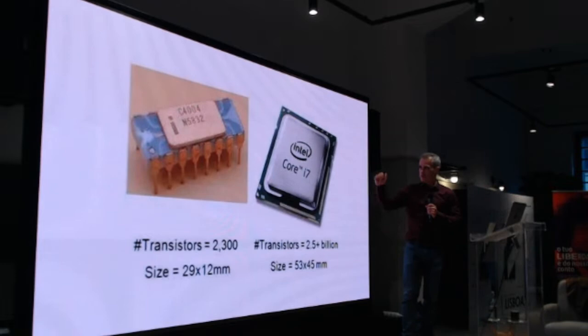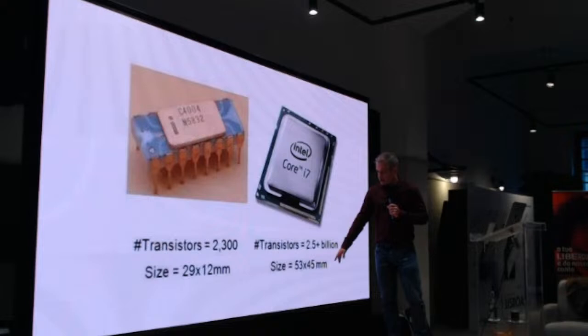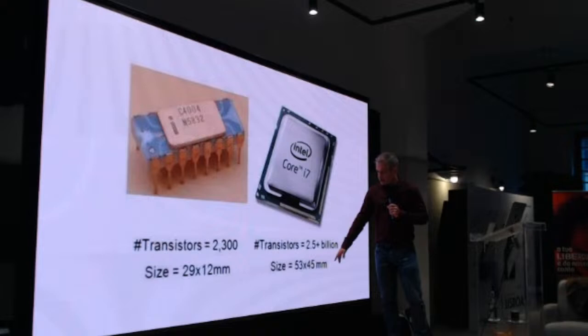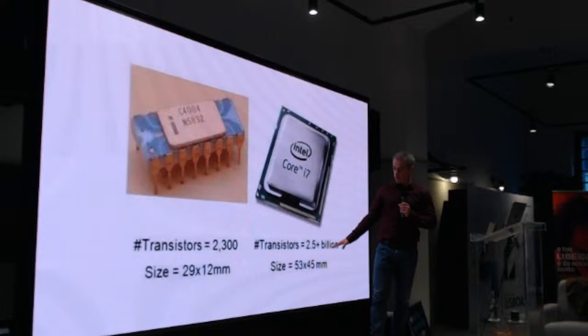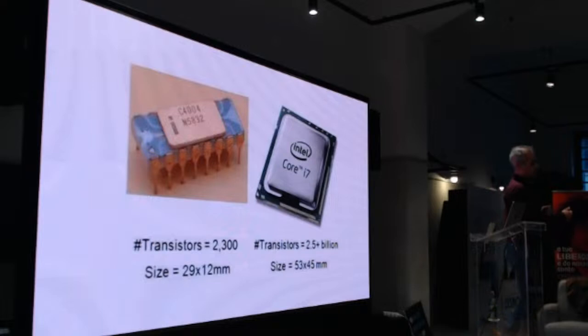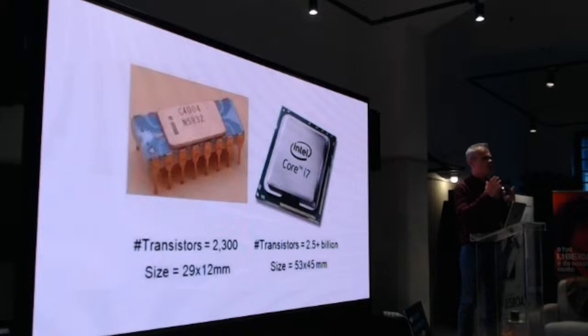This more recent processor already has 2.5 billion transistors — not much bigger physically than the previous one. If you see that the overall dimension has not increased that much, but the level of integration is so high, each transistor must be much smaller. We are now talking about a few nanometers in dimension for each transistor. I'll put something in scale for you to understand what a nanometer is compared to something we all know.